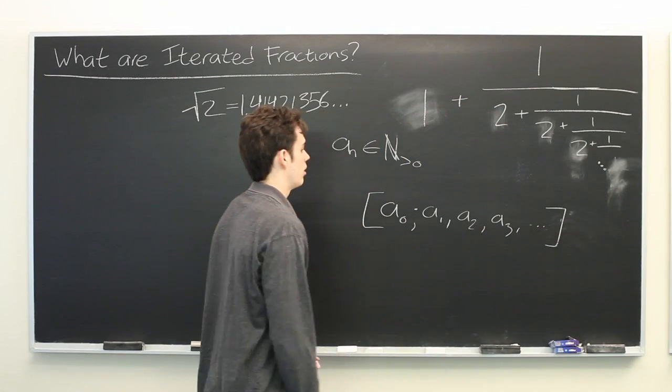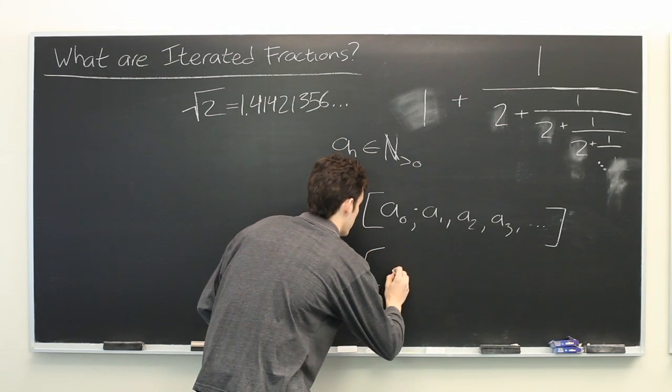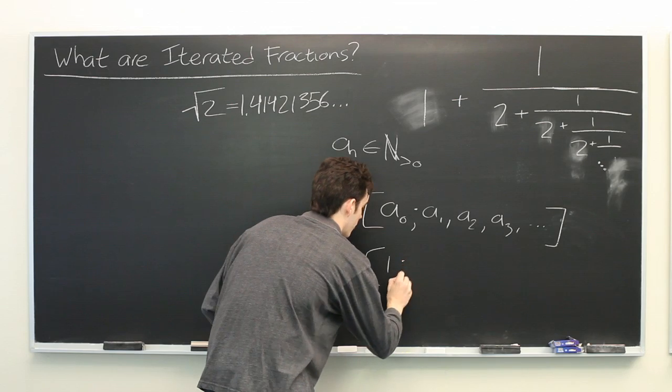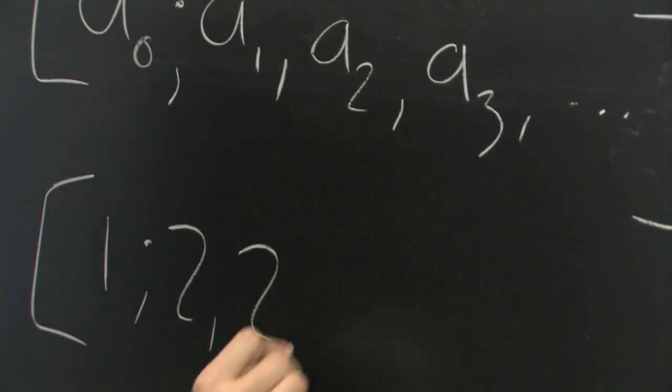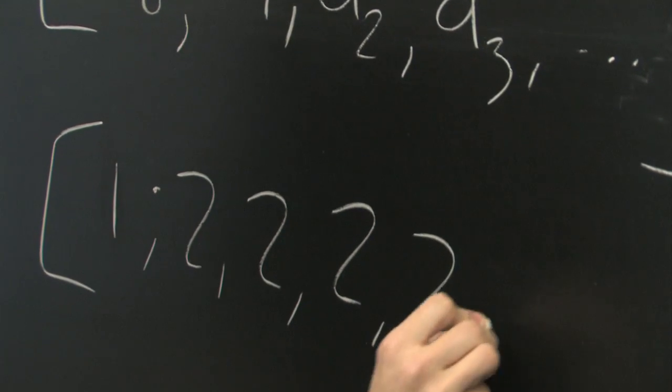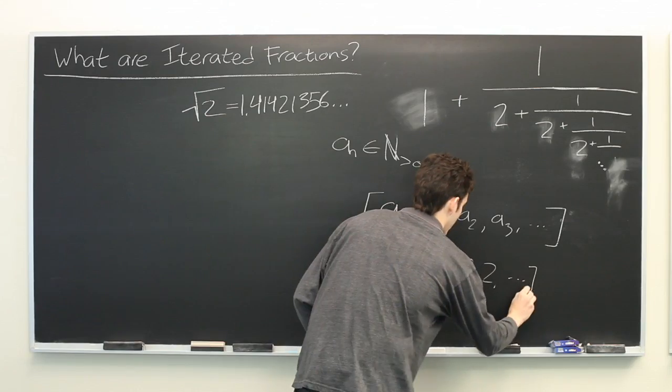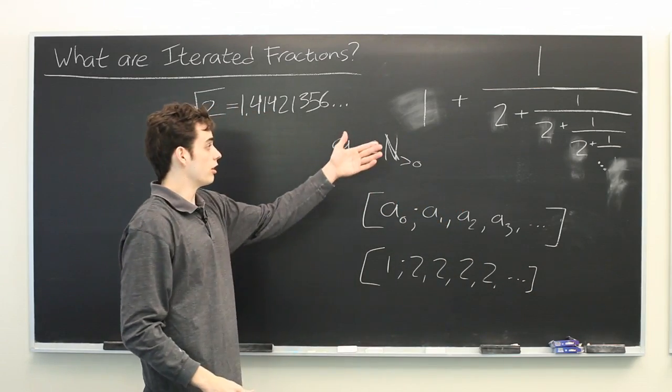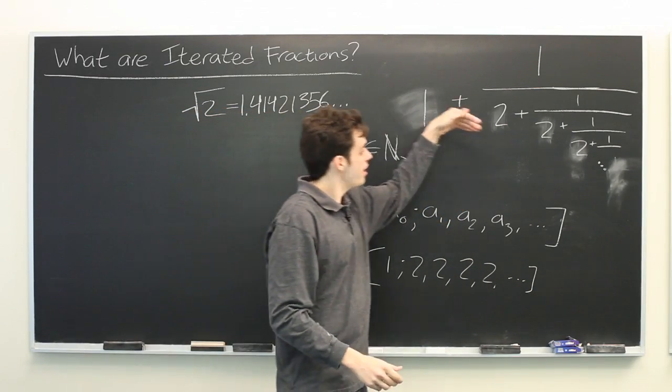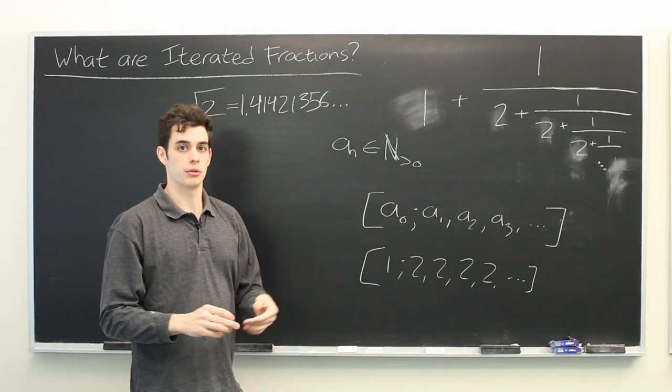So, that notation would be like this: 1, 2, 2, 2, 2, 2, and so on and so forth. And if you take the limit of this process, as you add infinitely many terms, it becomes square root of 2.